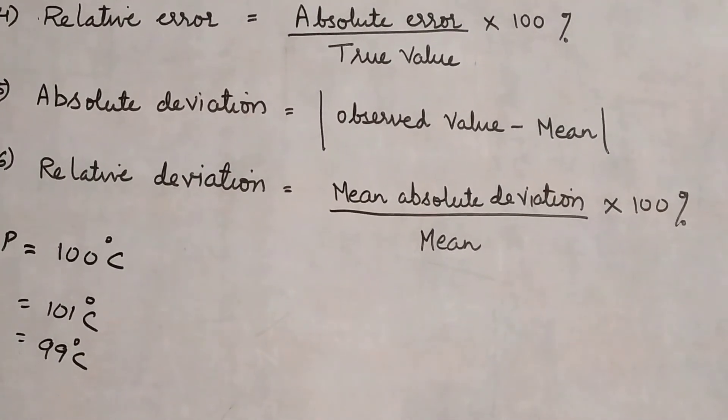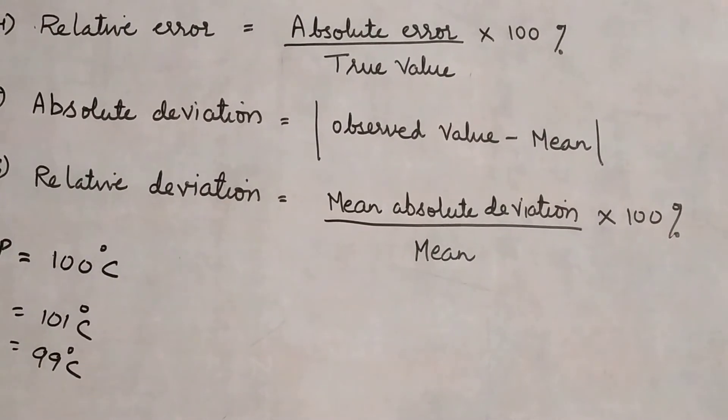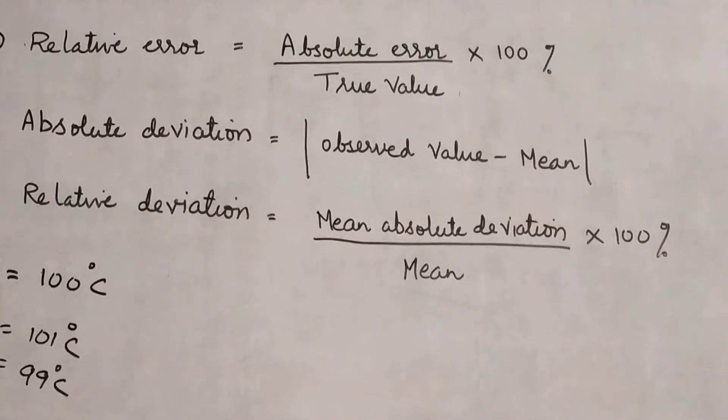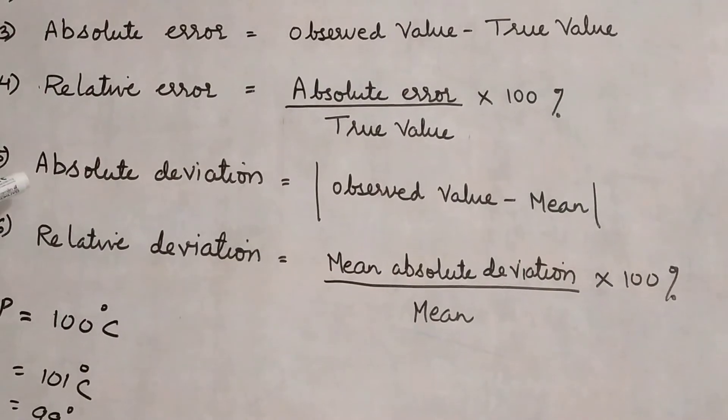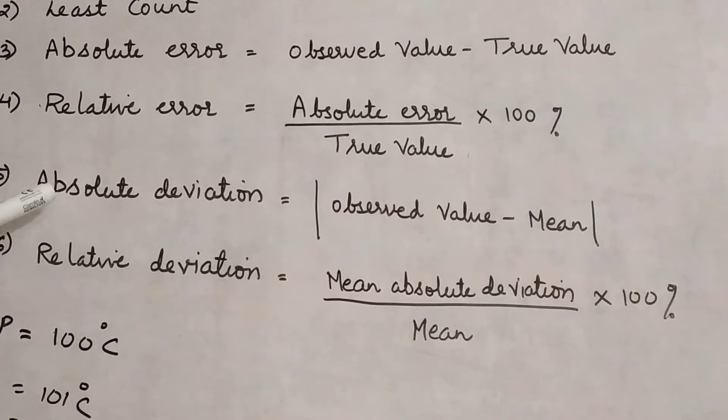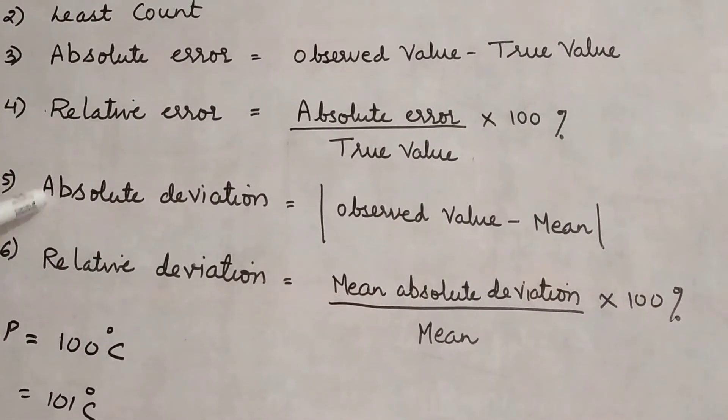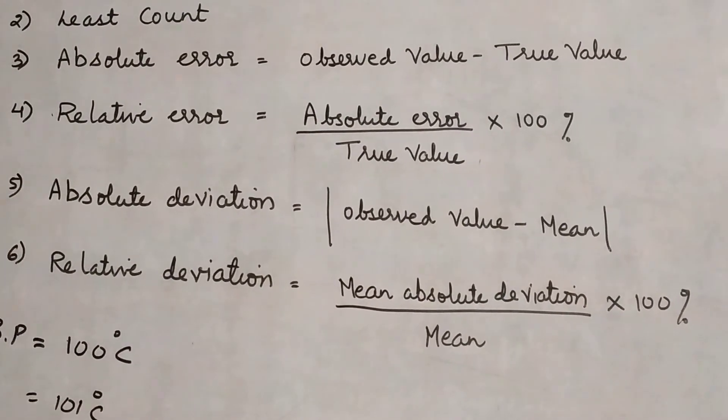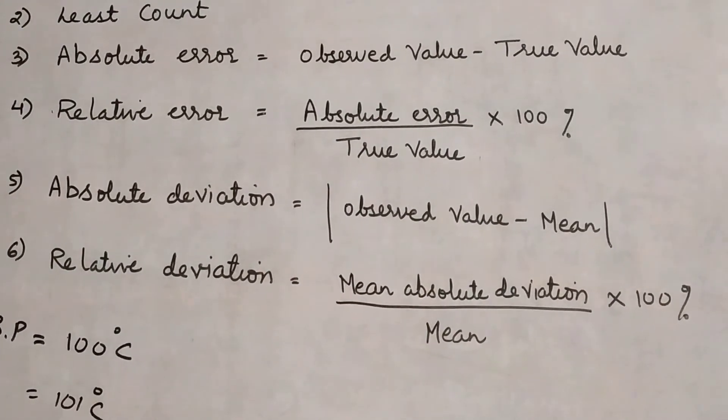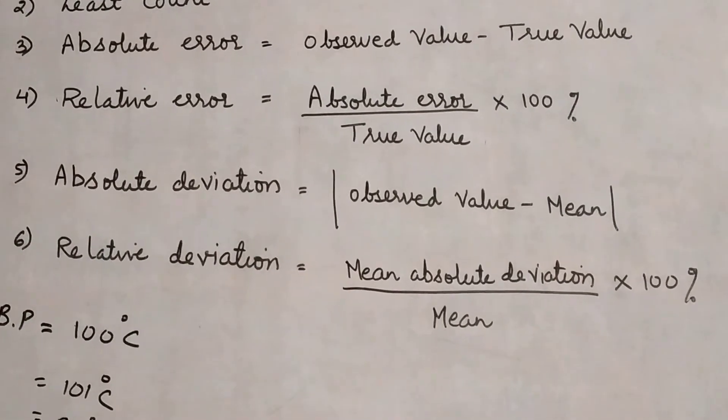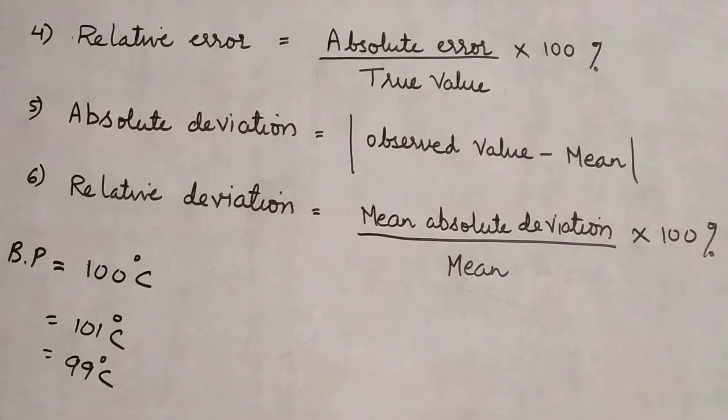Then we have the last point as relative deviation, which comes out to be mean absolute deviation. What is absolute deviation? There were four absolute deviations. Take their mean. Mean absolute deviation upon mean into 100 percent - that becomes relative deviation.